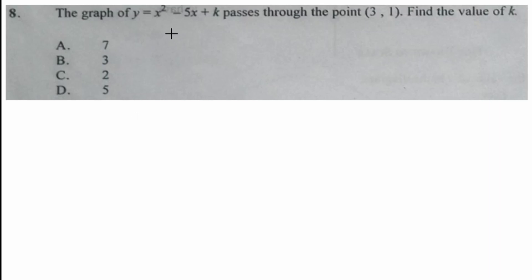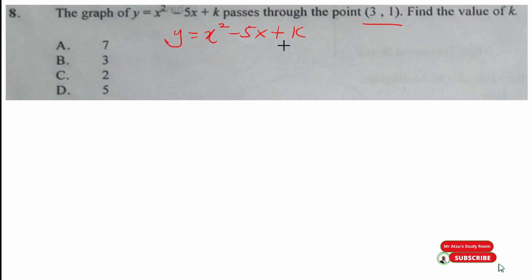We start by saying that if the graph y equals x squared minus 5x plus k passes through this point, then the coordinate of this point must satisfy this equation. Meaning that when we put in the x and y coordinate of this point into this equation, whatever we get on the left-hand side should equal the right-hand side. Since we don't know k, we substitute the coordinate of this point into the equation — it passes through it, so it will satisfy. Whatever value we get for k becomes the answer.